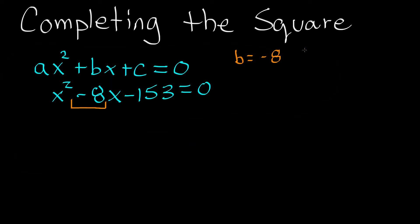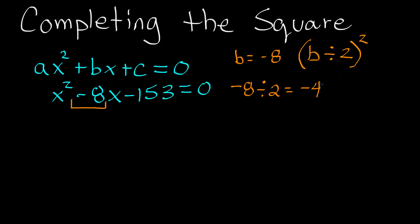The trick with completing the square is we take our b term, divide it by two, and then square the result. So we take negative eight and divide it by two: negative eight divided by two equals negative four. Then we square negative four: negative four times negative four is sixteen. So (b/2)² equals sixteen.